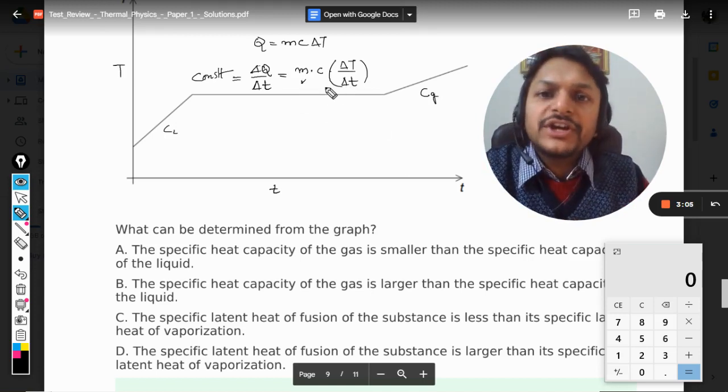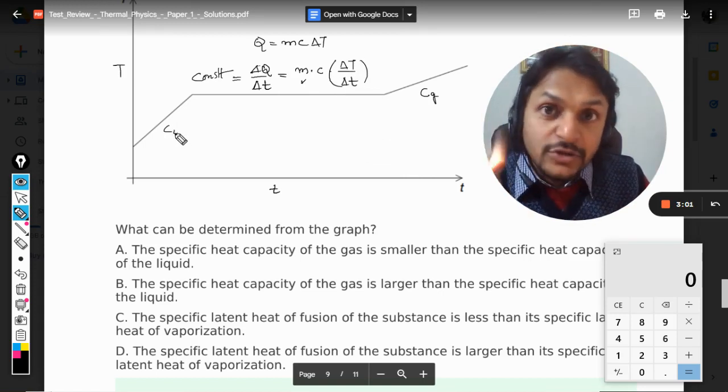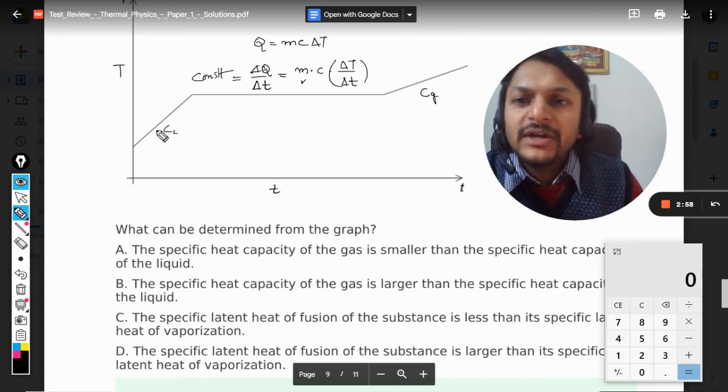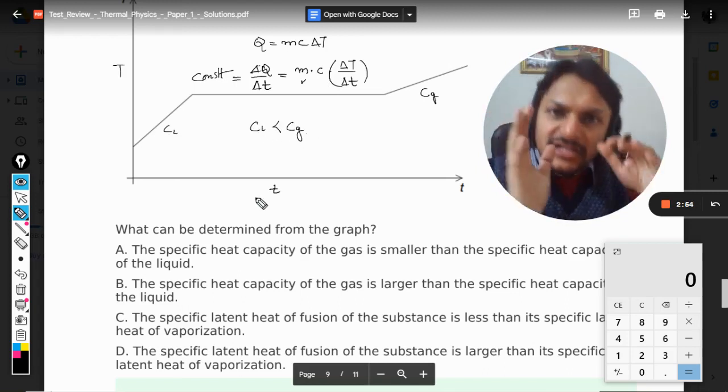Obviously mass is also not going to change. So obviously if delta T by t is more in the case of liquid, c will be lesser in the case of liquid. So c_L is going to be lesser than the specific heat of gas.